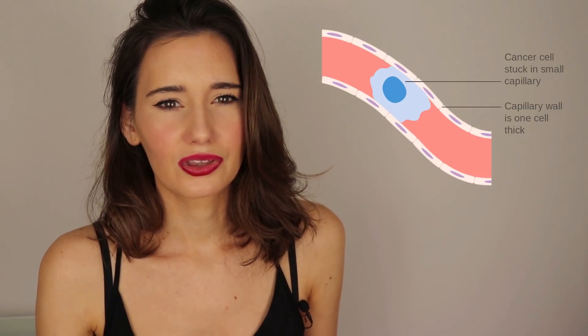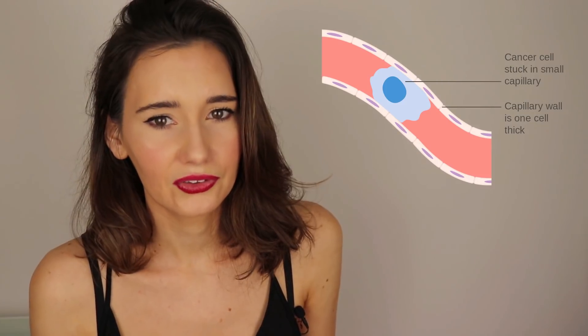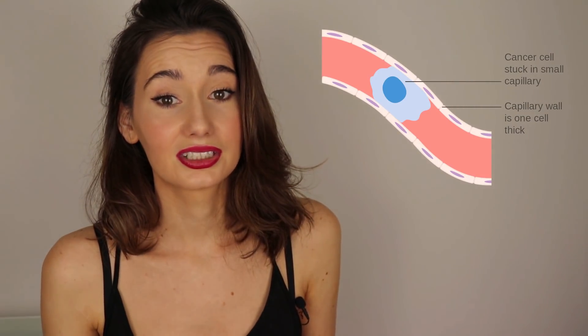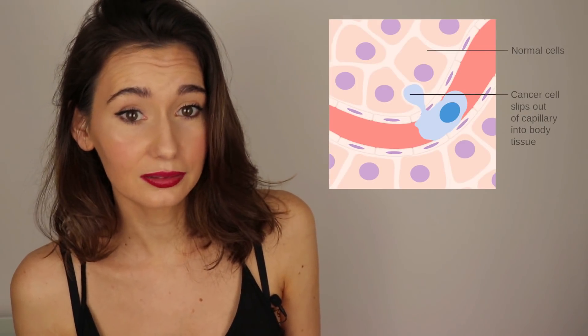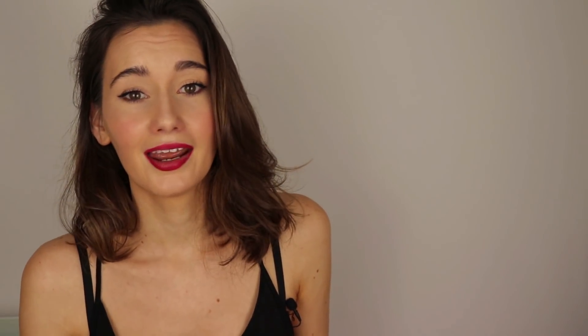Small blood vessels or capillaries are normally about a cell thick, so the cancer cells move along until they get stuck in a capillary. The cancer cell can then move through the wall of the blood vessel and into the tissue of the liver, for example.